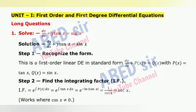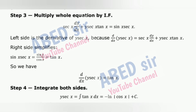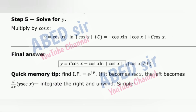Step 2 — Find the integrating factor IF = e^∫tan x dx = e^(ln|sec x|) = sec x. Step 3 — Multiply the whole equation by IF. The left side becomes the derivative of y·sec x. The right side simplifies: sin x · sec x = sin x/cos x = tan x. So we have d/dx(y·sec x) = tan x. Step 4 — Integrate both sides. Step 5 — Solve for y by multiplying by cos x.